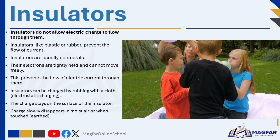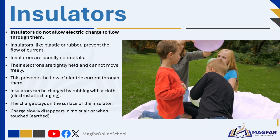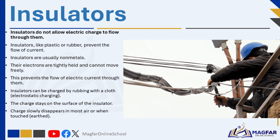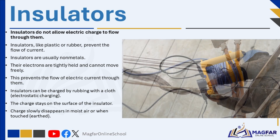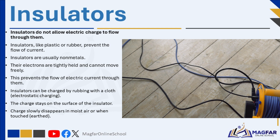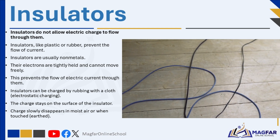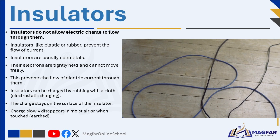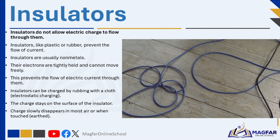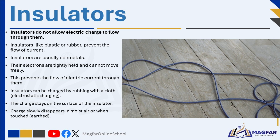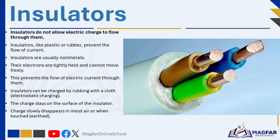It's important to remember that you cannot charge a conductor by rubbing it. That's because conductors, like metals, allow electric charges to move freely. So if you try to build up charge by rubbing, the charge will not stay in one place — it will flow away immediately through the metal. That's why we use insulators, like plastic or rubber, for rubbing and building up static electricity, because the charges stay on the surface.